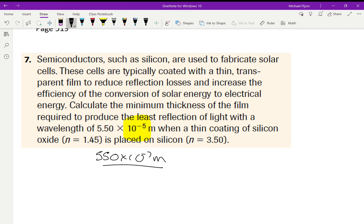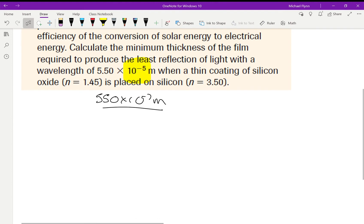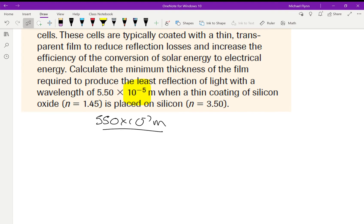So, here's the deal. Okay. You've got a thin coating of transparent silicon, okay, where the index of refraction is equal to 1.45. We are looking for the least reflection. The least reflection is destructive interference. Okay. So, we're looking for destructive interference with a wavelength of 550 nanometers. All right.